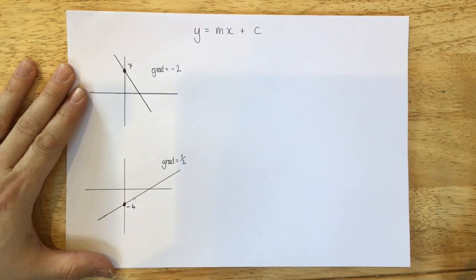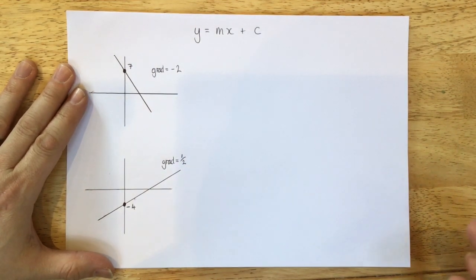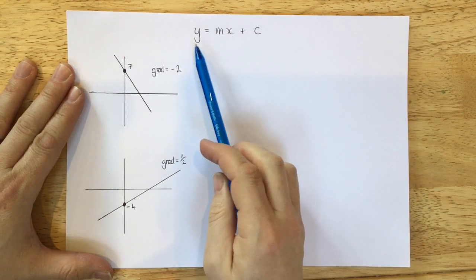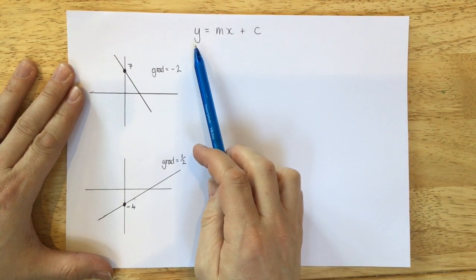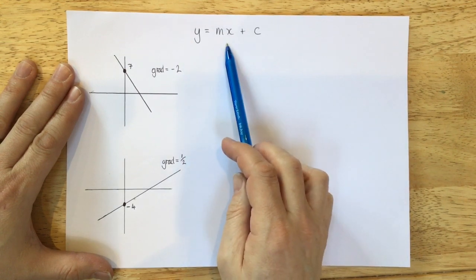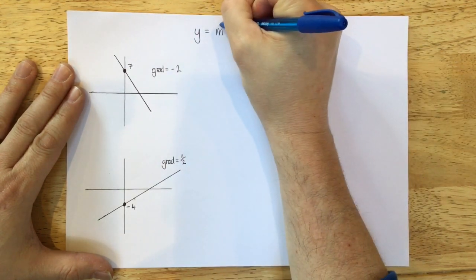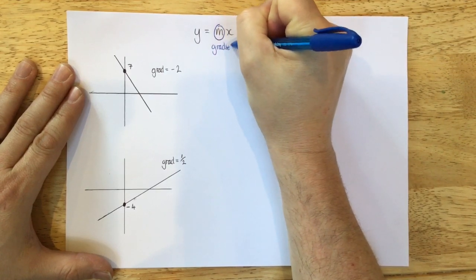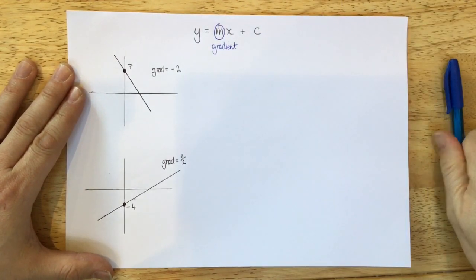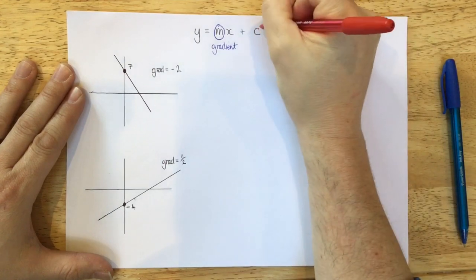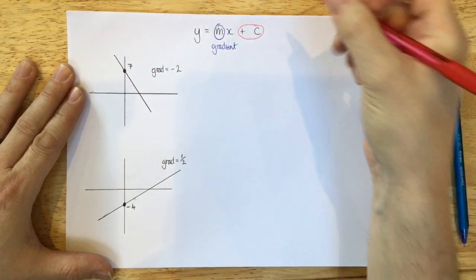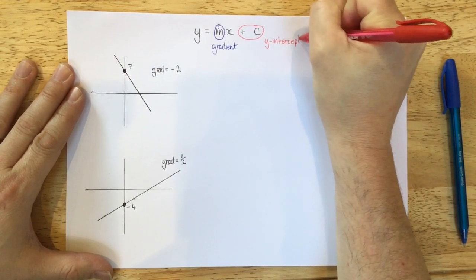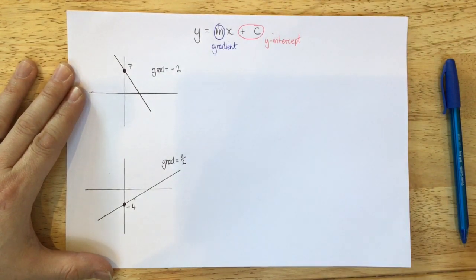Okay, in this video we want to look at how to find the equation of a line if you're given a diagram. It starts with the general equation of any line, y equals mx plus c, where the value m stands for the gradient, how steep the line is, and the value at the end, plus c, is our y-intercept, where the line crosses the y-axis.